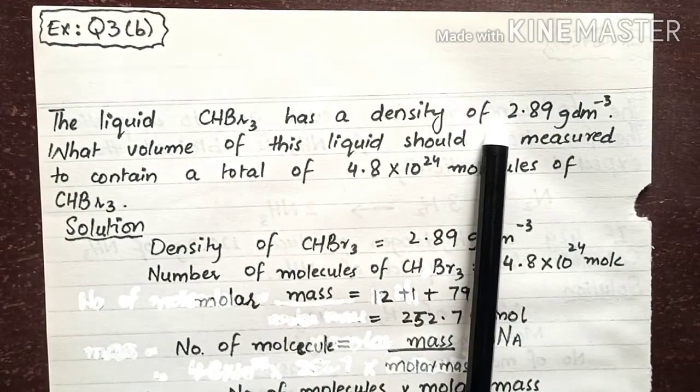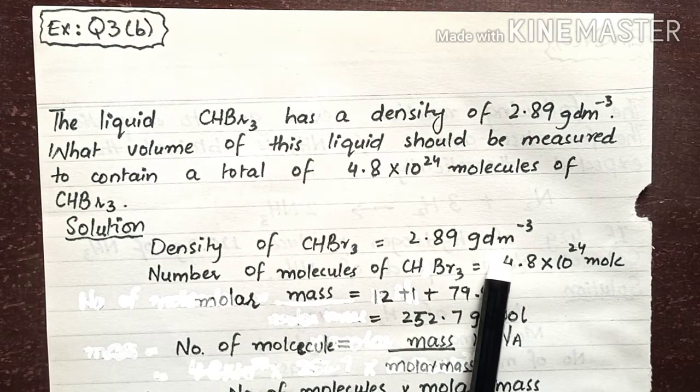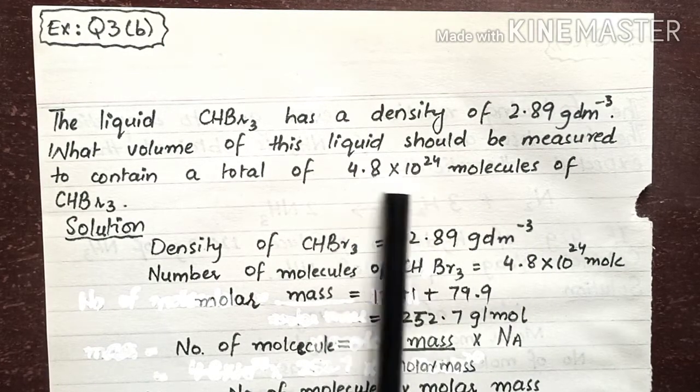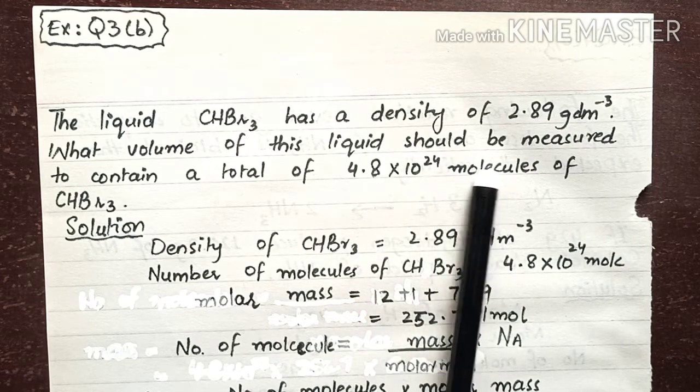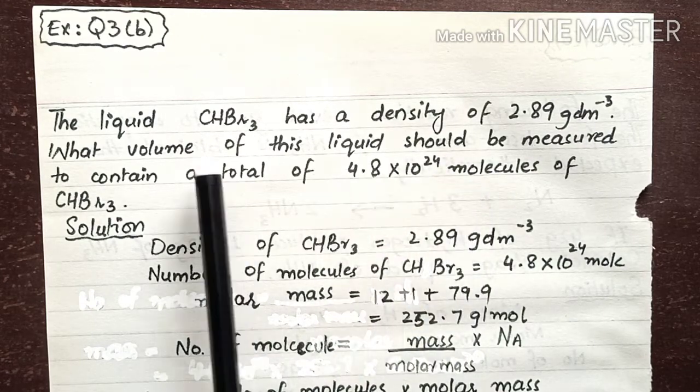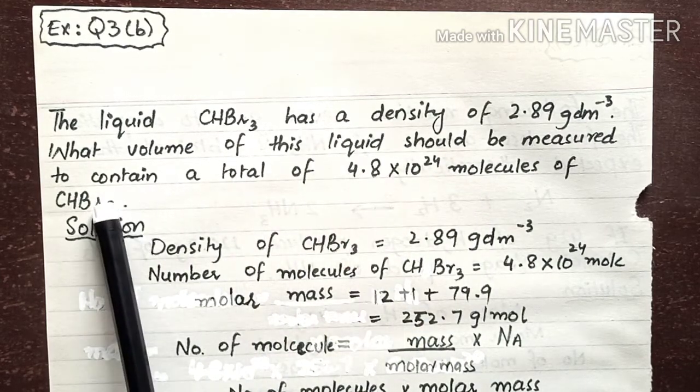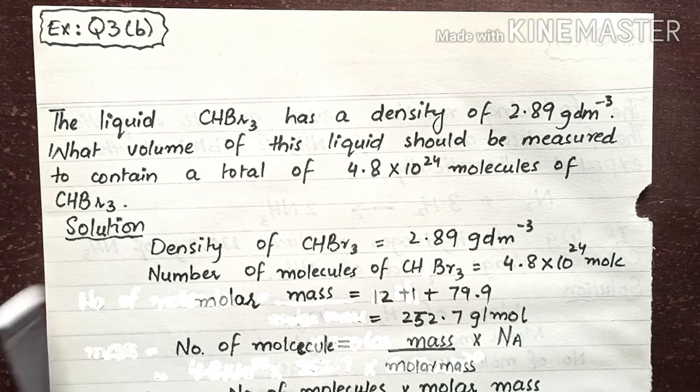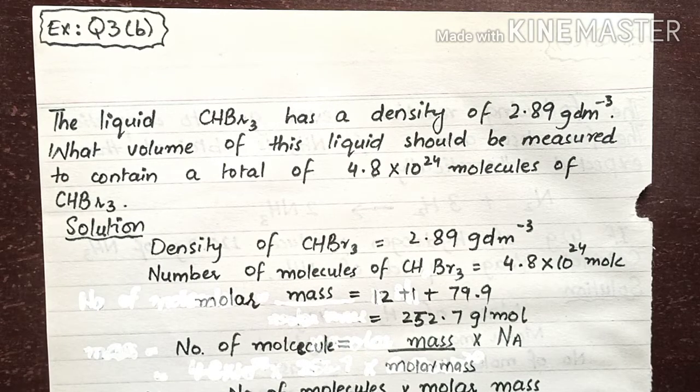You are given the density of 2.89 grams per dm³ and the number of molecules, 4.8 × 10²⁴. You are asked to calculate the volume of the liquid CHBr3. Before calculating the volume, we are going to calculate the mass of CHBr3.